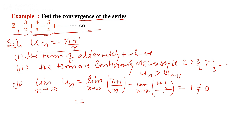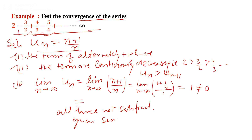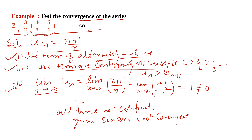The first two conditions are satisfied, but all three conditions are not satisfied. By Leibniz's test, the first condition (terms are alternating) and second condition (terms are continuously decreasing) are met, but the limit as n tends to infinity of u(n) is not equal to 0. Due to the third condition failing, by Leibniz's test the given series is not convergent.